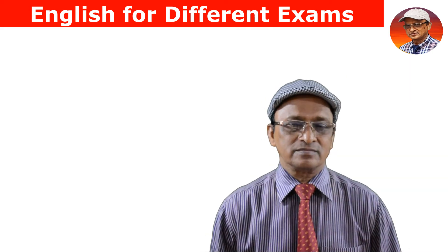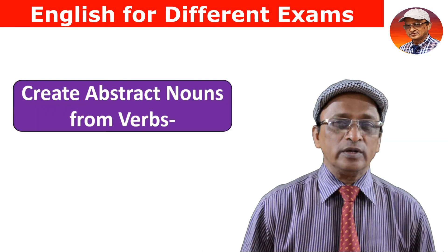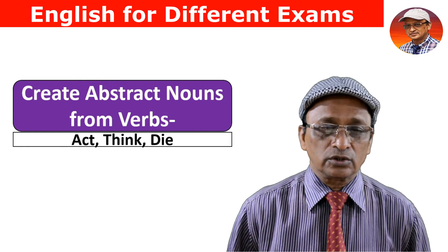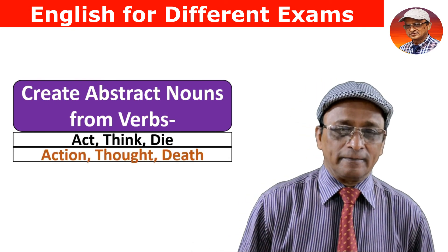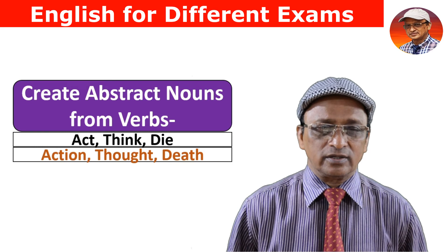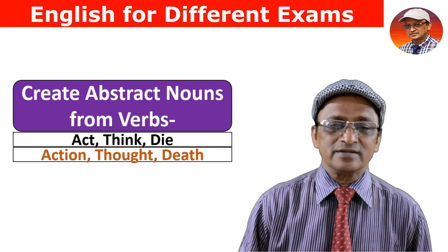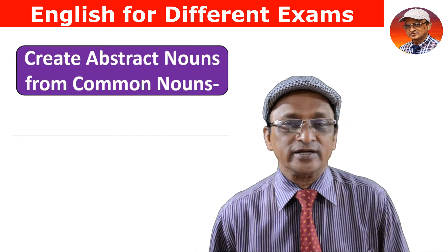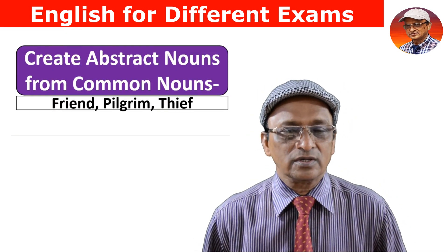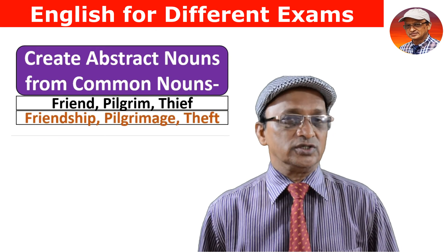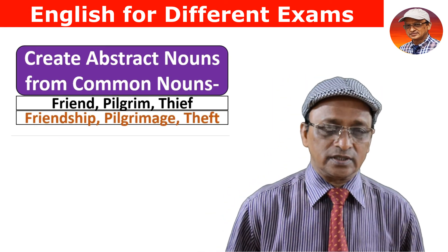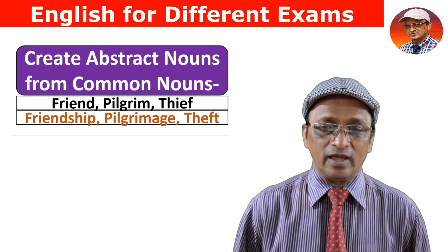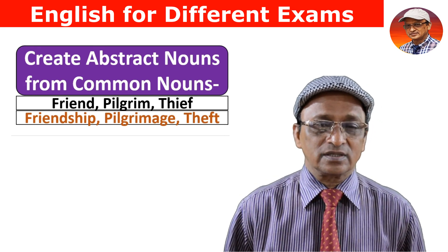Now let's create abstract nouns from verbs. 'Act' gives 'action.' 'Think' gives 'thought.' 'Die' gives 'death.' And creating abstract nouns from common nouns: 'friend' gives 'friendship,' 'pilgrim' gives 'pilgrimage,' and 'thief' gives 'theft.'